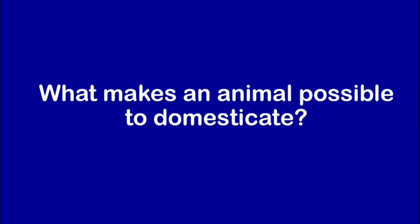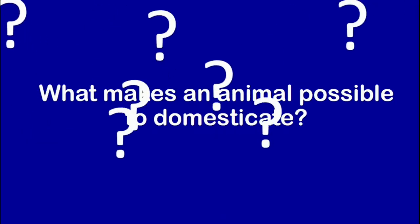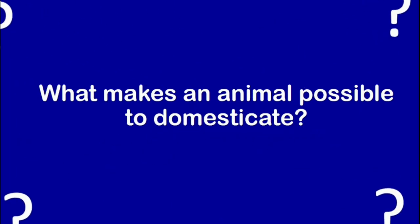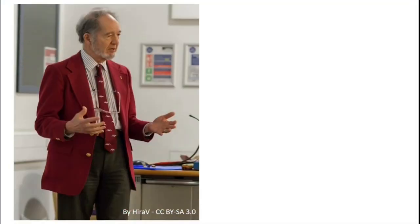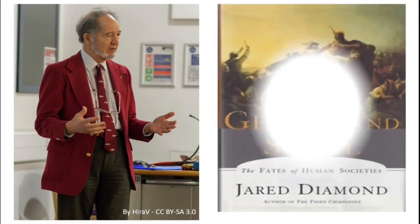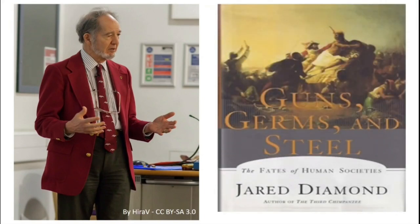What makes an animal possible to domesticate? It is well explained by Jared Diamond in his book 'Guns, Germs and Steel,' where he proposed six crucial characteristics of an animal to be domesticated. Let's discuss them briefly.